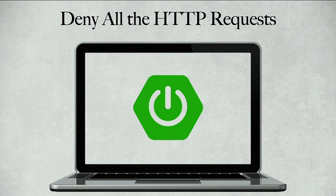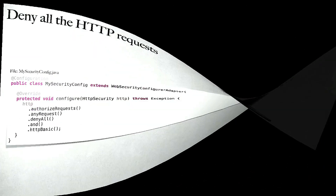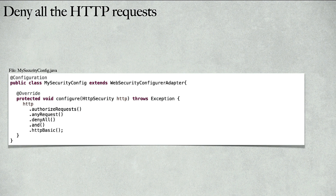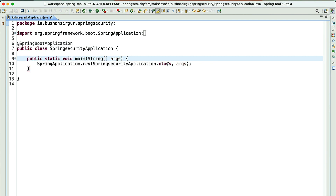In this video we're going to learn how to deny all HTTP requests inside a Spring Security application. Assume there's a scenario where we need to deny all HTTP requests. Inside our security configuration file, we can write code to deny all requests: http.authorizeRequests().anyRequest().denyAll().and().httpBasic(). Any request that comes to our Spring Boot application will be denied by Spring Security.